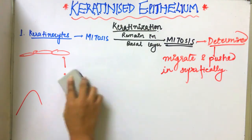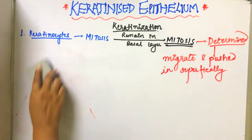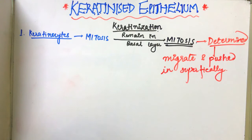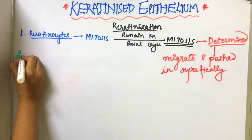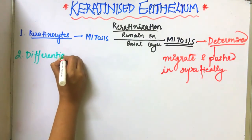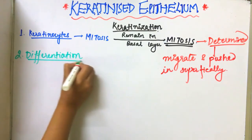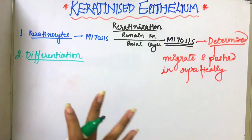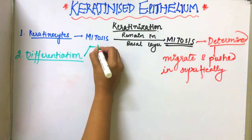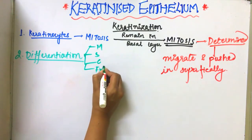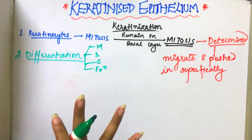After mitosis, the differentiation of keratinocytes takes place. In differentiation, the keratinocytes show changes in their morphology, composition, structure, and function. In terms of morphology, their shape is altered.